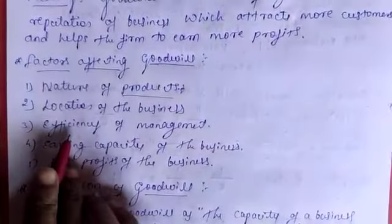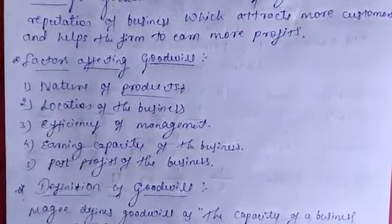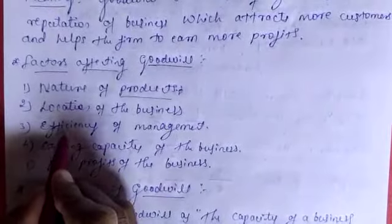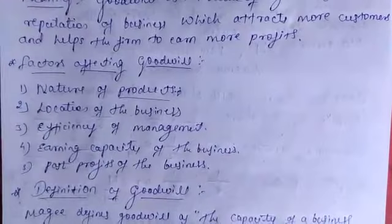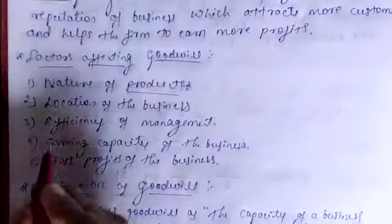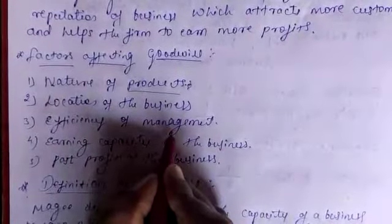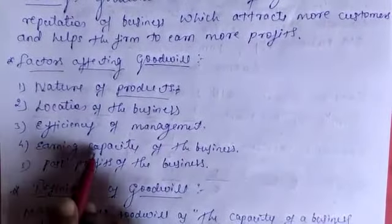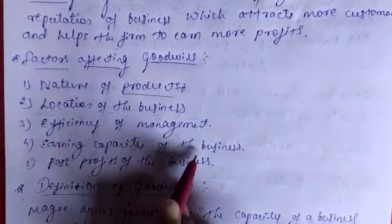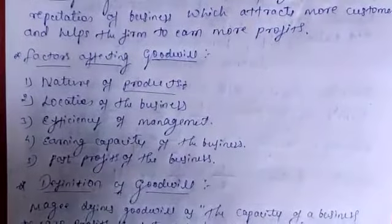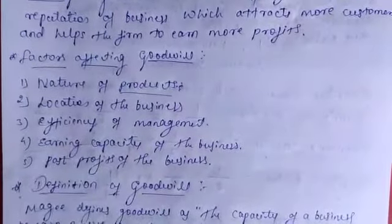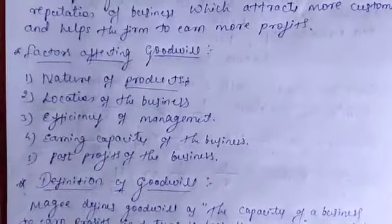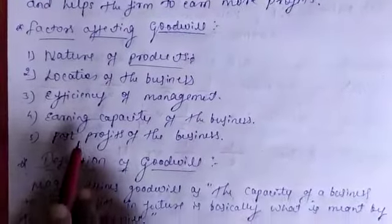The third factor is efficiency of management. Efficiency means completing a task in minimum cost or minimum time. This also creates goodwill for the firm. The fourth factor is earning capacity of the business — the profit earning capacity. The fifth is past profits of the business — profits from earlier years also depend on goodwill. These are the factors affecting goodwill.